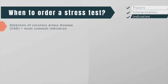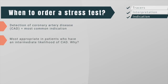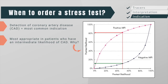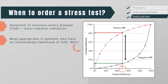Detection of coronary artery disease is one of the most common indications for a stress test, most appropriate in patients with an intermediate likelihood of coronary artery disease. For a patient with a 50% pre-test likelihood, a positive test increases the likelihood to 80% while a negative test decreases it to 10% — a difference of 70%. In contrast, for a patient with a 5% pre-test likelihood, a positive scan increases likelihood to only 20%, while a negative scan decreases it to 1%, a difference of only 19%.